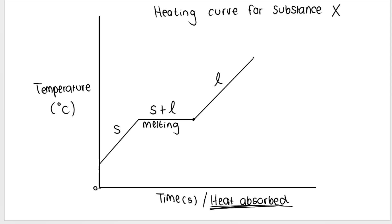Eventually when we've added enough heat energy to the liquid it will reach its boiling point, and boiling or evaporation will occur — another phase change. Remember what we said about phase changes: the graph will be horizontal. This is when boiling or evaporation is occurring; the substance is changing from a liquid to a gas, so both liquid and gas phases are present. After the phase change it becomes solely a gas, and we can continue heating that gas — a cold gas, a warmer gas, a hot gas. That section represents boiling or evaporation.